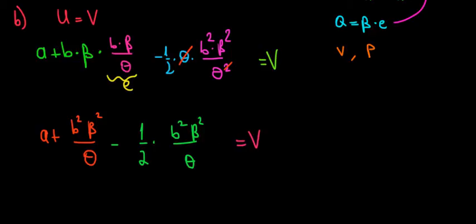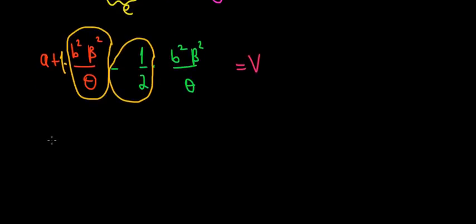Now before we move on, what we can see here is that we have a subtraction of the same term: B squared beta squared divided by theta with the coefficient of 1, and here we have minus a half of it. One minus a half is just going to be a half. So we could write this as A plus one-half times B squared beta squared divided by theta equals V.